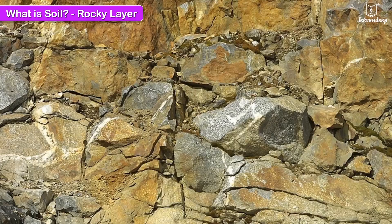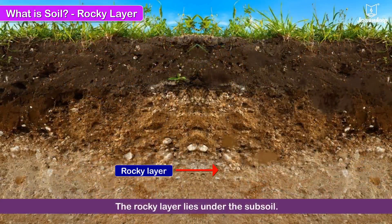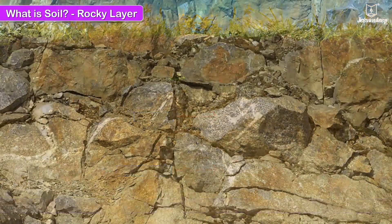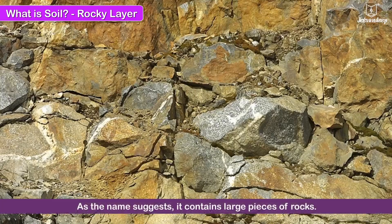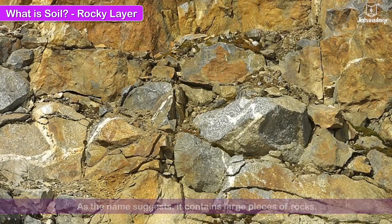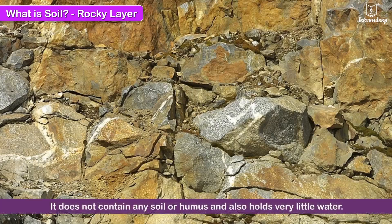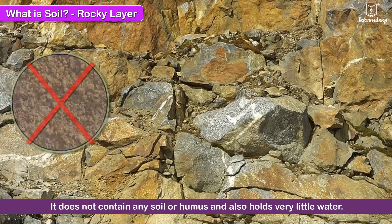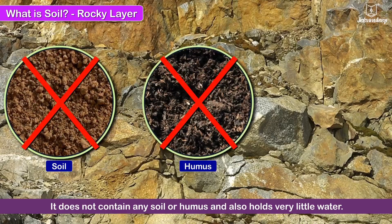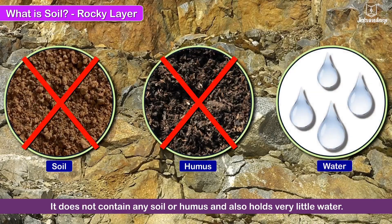The rocky layer lies under the subsoil. As the name suggests, it contains large pieces of rocks. It does not contain any soil or humus and also holds very little water.